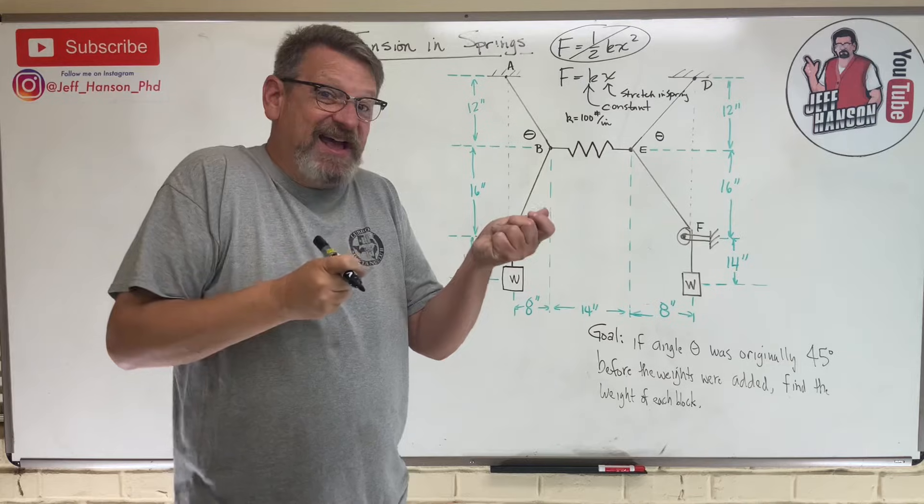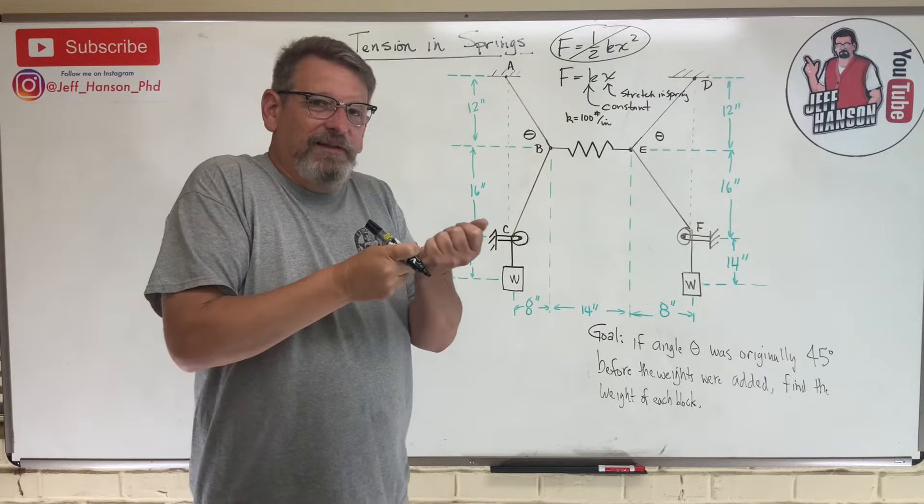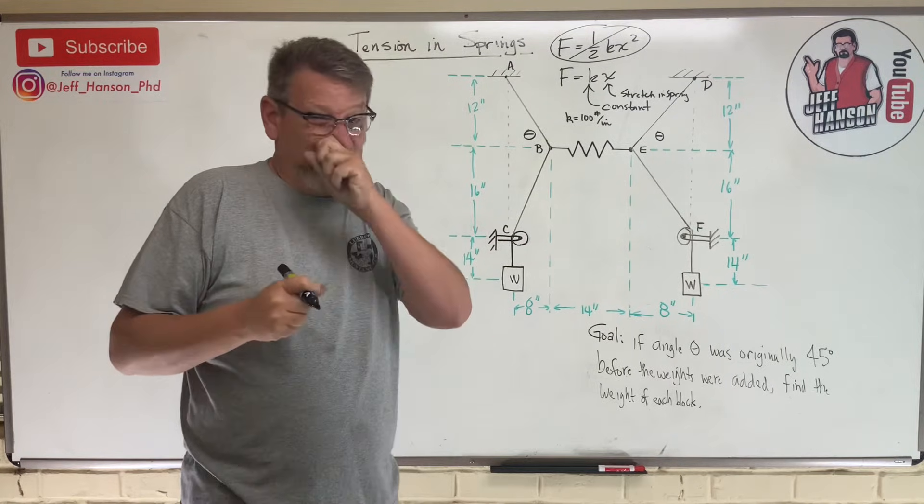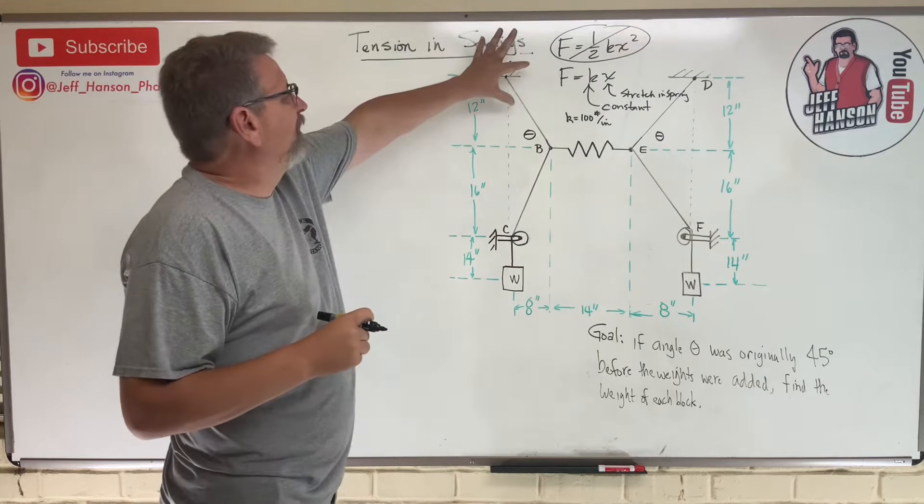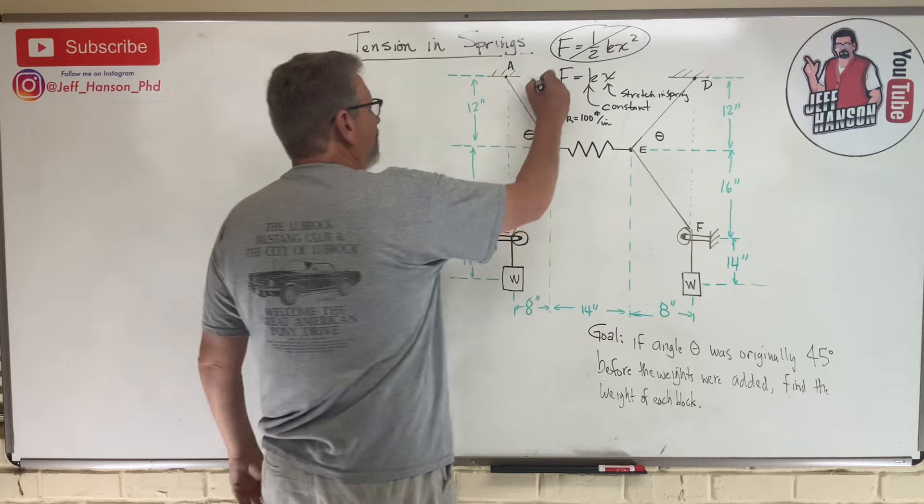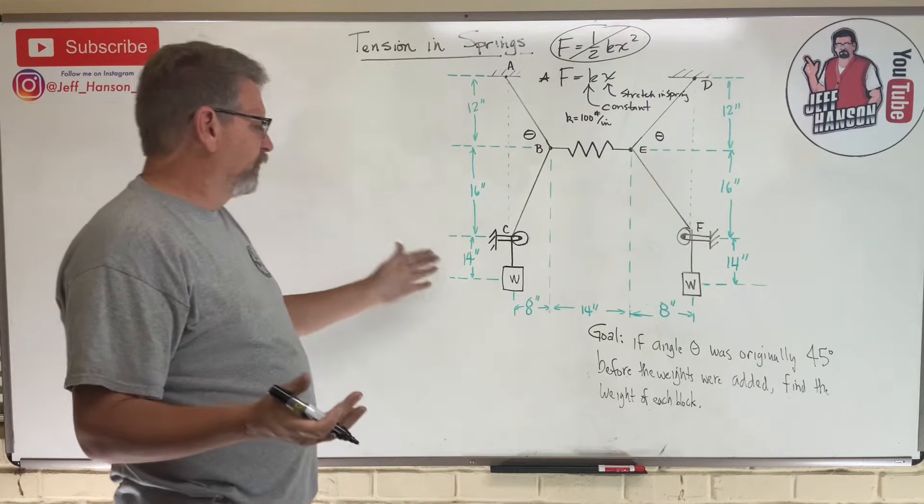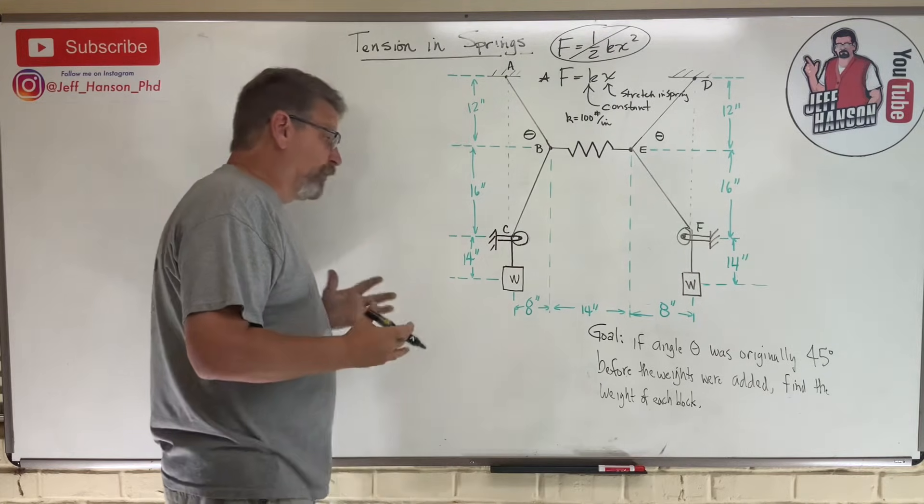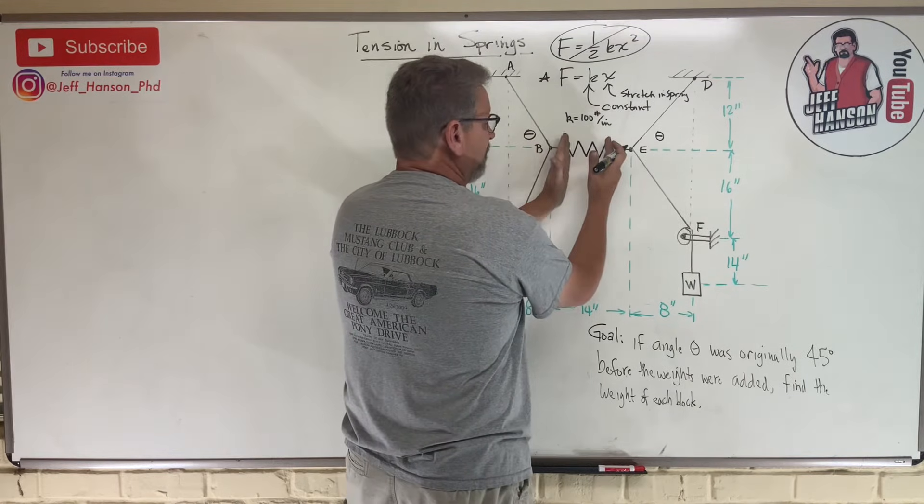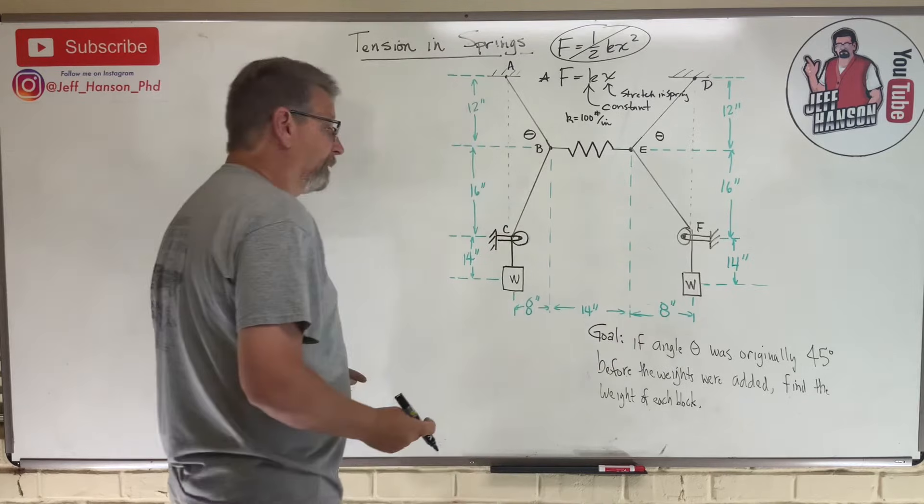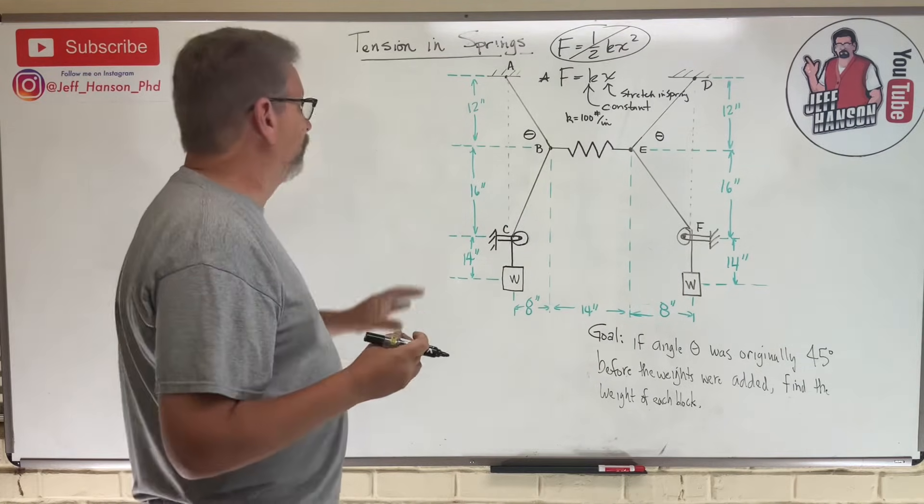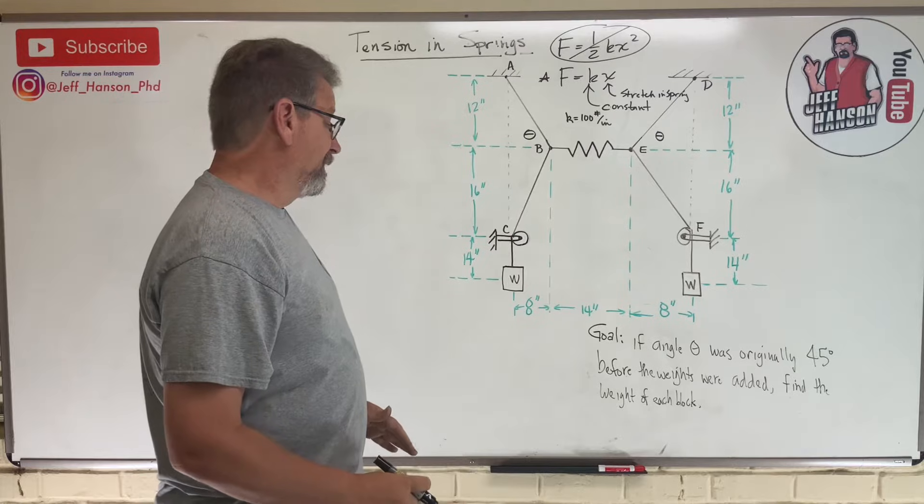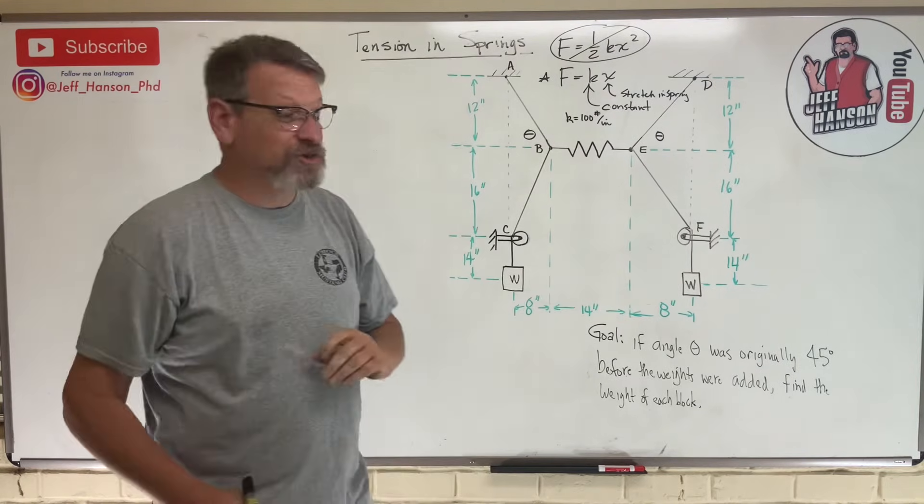It's how much the spring has stretched. If it started off six inches, now it's eight inches, so x would be two inches - it stretched two inches. That's the equation we need, that's our money right there. Now what are they asking us for here? If the angle theta, which is here, was originally 45 degrees before the weights were added, find the weight of each block.